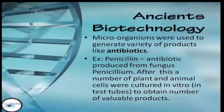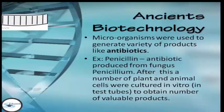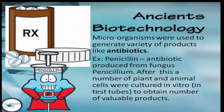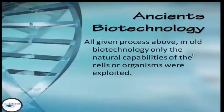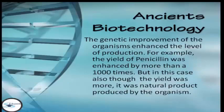Microorganisms were also used to generate a variety of products like antibiotics. One example of antibiotics is penicillin, which is an antibiotic produced from the fungus Penicillium. After this, a number of plant and animal cells were cultured in vitro in test tubes to obtain valuable products. In all of these processes, only the natural capabilities of the cells or organisms were exploited.